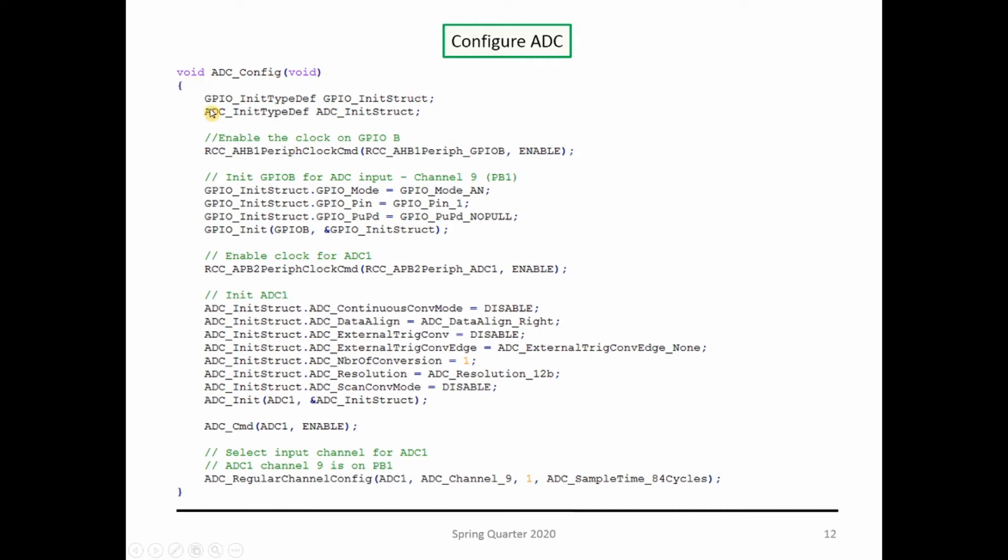Inside the ADC config, you have the structures to parameterize the GPIO and the ADC. You enable the clock for port B because I'm using PB1 on channel 9, setting it up in analog mode with no pull-up. Then enable the clock for the ADC under APB2 and parameterize it: single mode by disabling continuous mode.